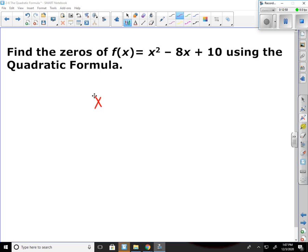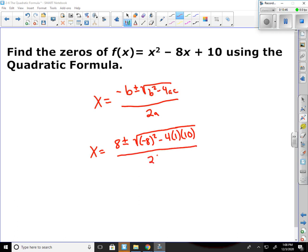Okay. So for this one, x equals negative b plus or minus square root of b squared minus 4ac all over 2a. Now I'm just plugging my numbers in. Negative b, that's negative of a negative 8, so that becomes a positive 8. Plus or minus square root of negative 8 squared minus 4 times 1 times 10 all over 2 times 1.